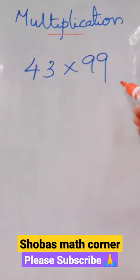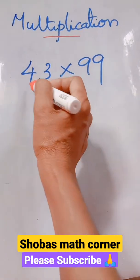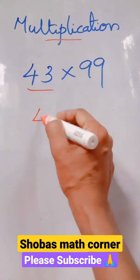Okay, 43 into 99. So how to multiply within seconds? It's very simple. What is the digit before 43? The number before 43? It is 42.